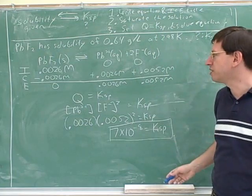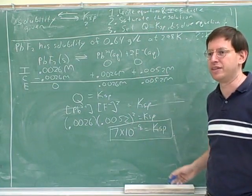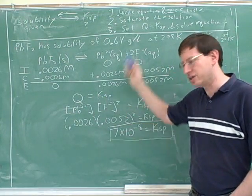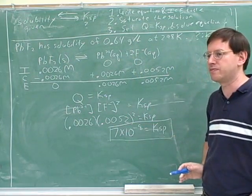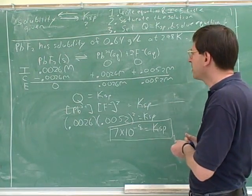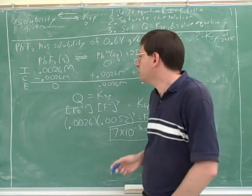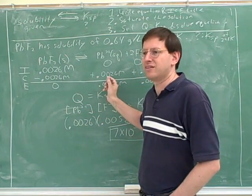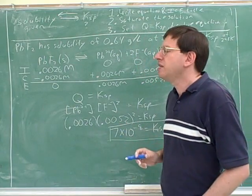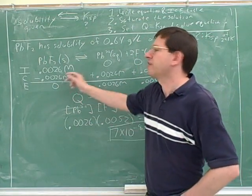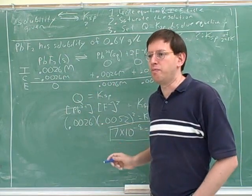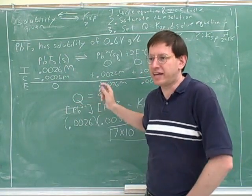If we write everything out carefully, we shouldn't forget either of those. The way I have this written on the board is exactly how I'd recommend writing it on your test: write the ICE table, write Q equals Ksp, write the expression. This is the exact notation that is good for solving these problems. In this case, we didn't need to use any x's because we knew how much was going to dissolve. But in some problems where you don't know how much is going to dissolve, it's okay to use x.